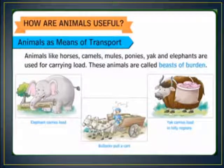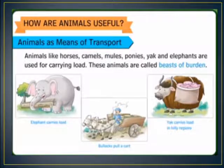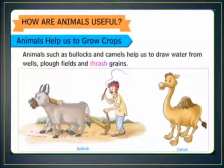Animals are also used as means of transport. Horses, camels, mules, ponies, yaks and elephants are used for carrying loads. These animals are called beasts of burden. Animals such as bullocks and camels also help us to draw water from wells, plough fields and thresh grains. They help us to grow crops.